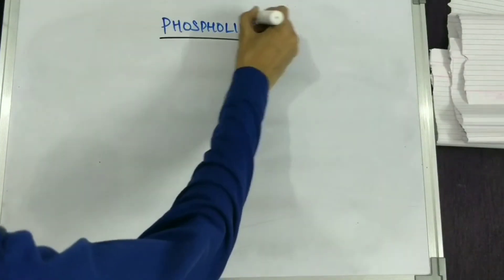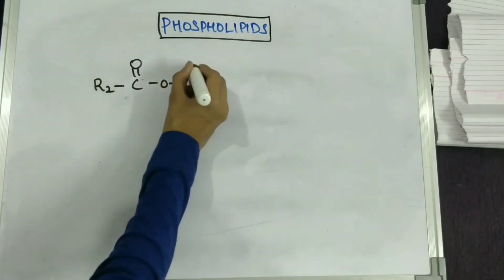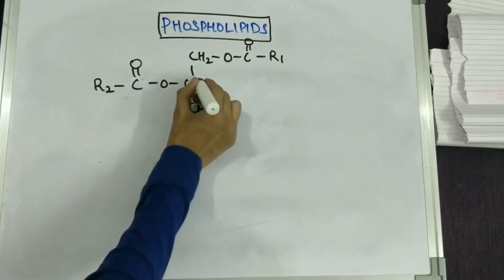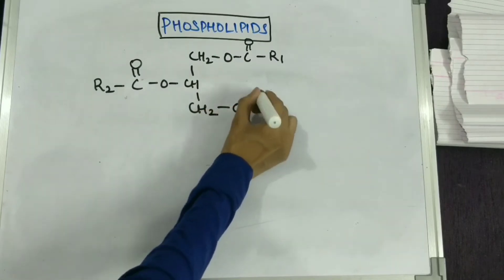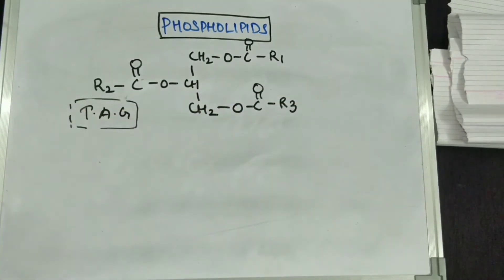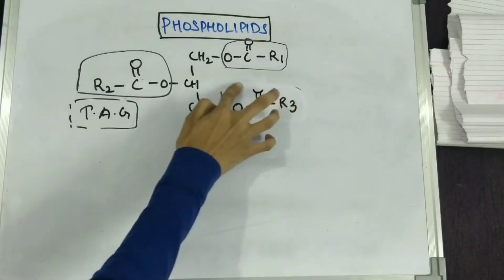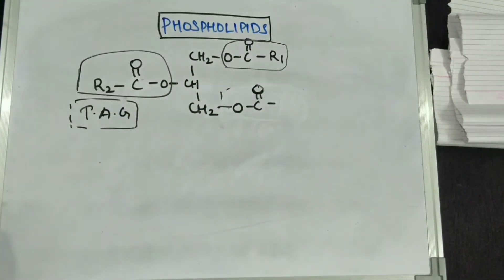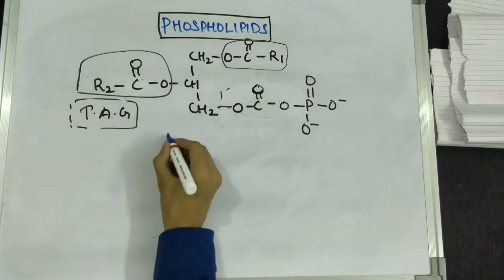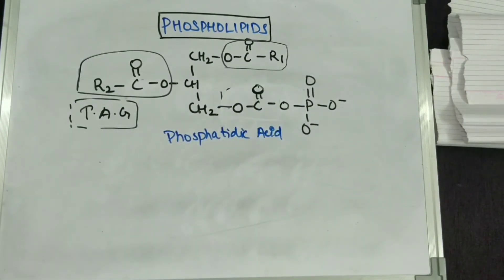Now let's see the structures of phospholipids. When you take three alkyl groups and the esters of acid, you get a triacylglycerol molecule. If you replace one alkyl group with a phosphate group, the structure is now known as phosphatidic acid.